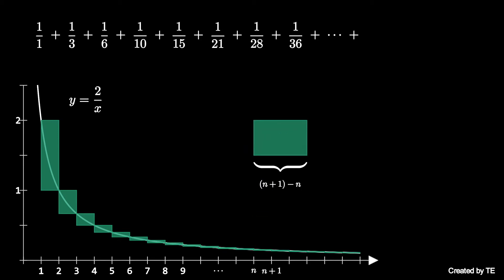By zooming in has width n plus 1 minus n and length 2 over n minus 2 over n plus 1.